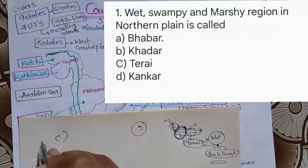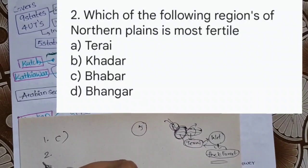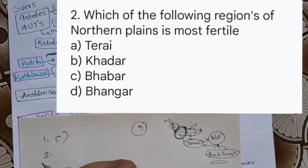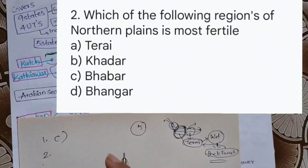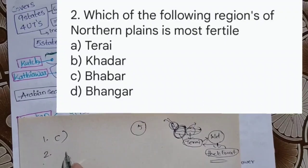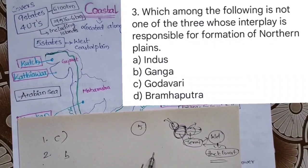Next question: which region of the northern plains is most fertile — Terai, Bhabar, Khadar, or Bangar? As we discussed in the last video, the most fertile place is B: Khadar.